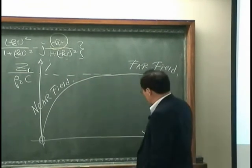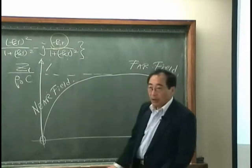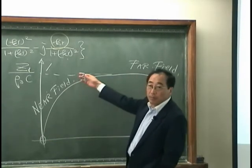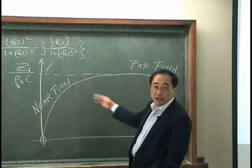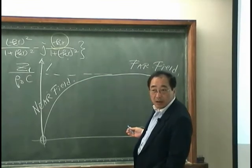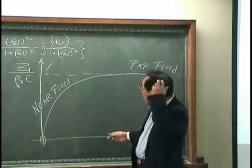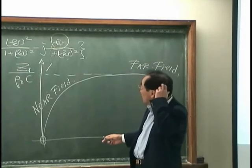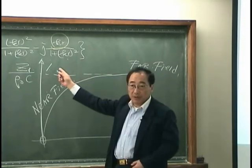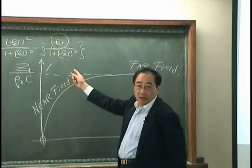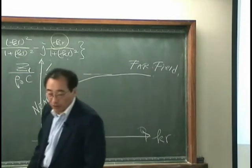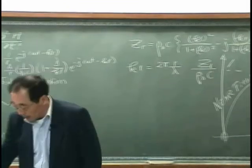So it tends to zero. That means there should be some increase and decrease between. Where we got the maximum of this, and I have to take a derivative and then try to find the maximum.